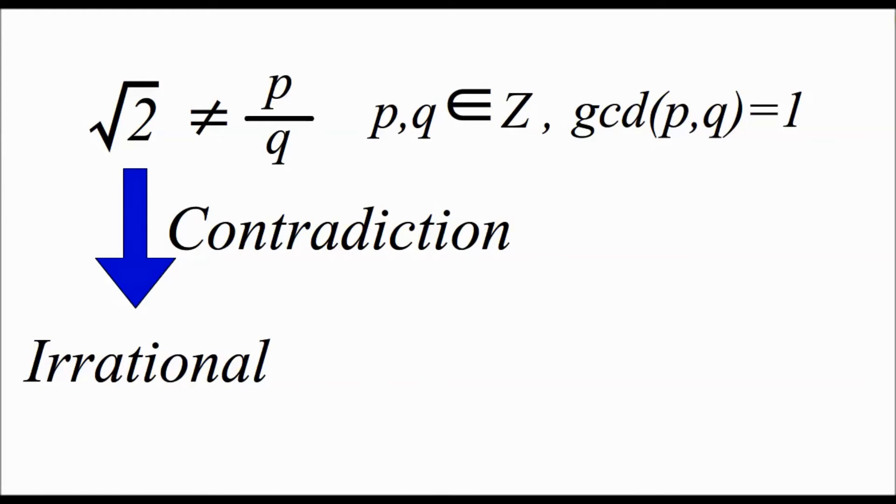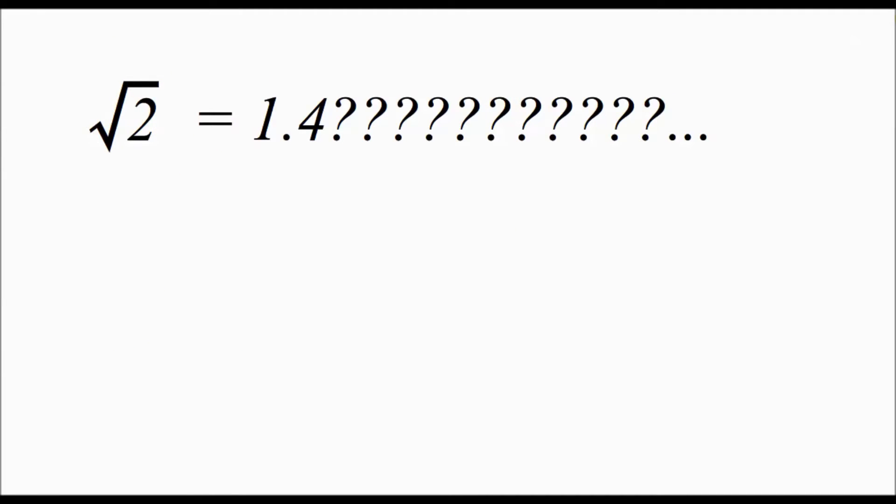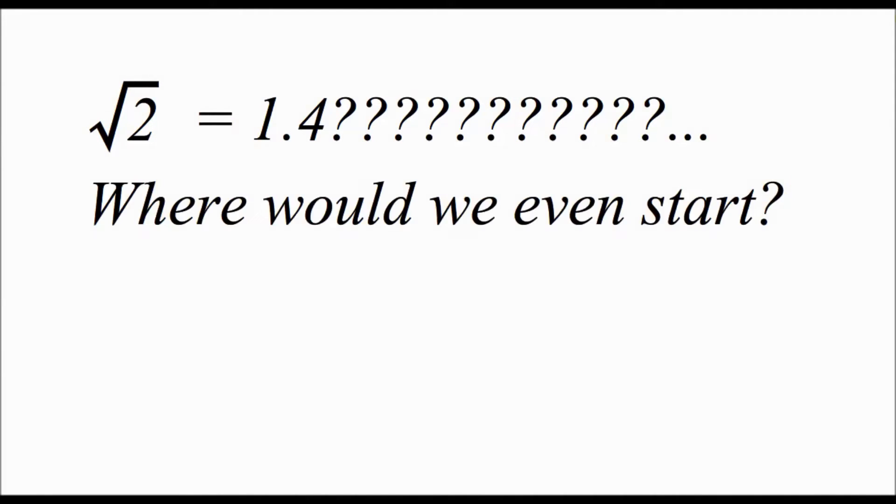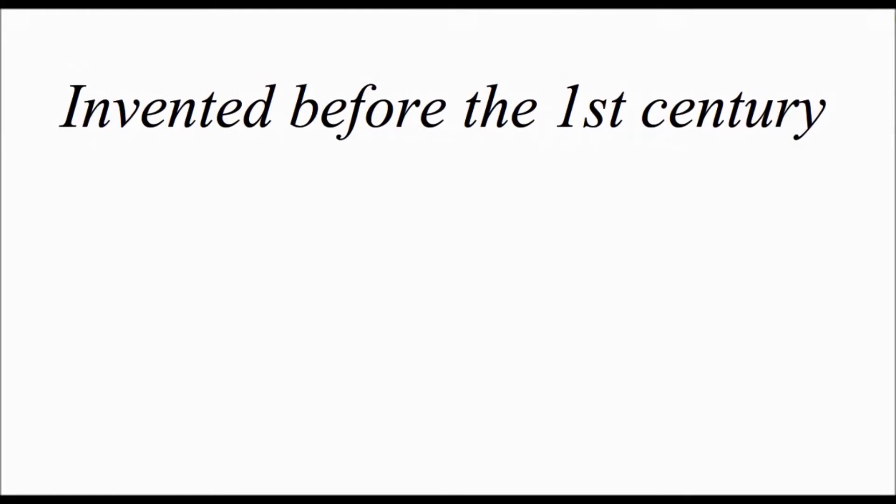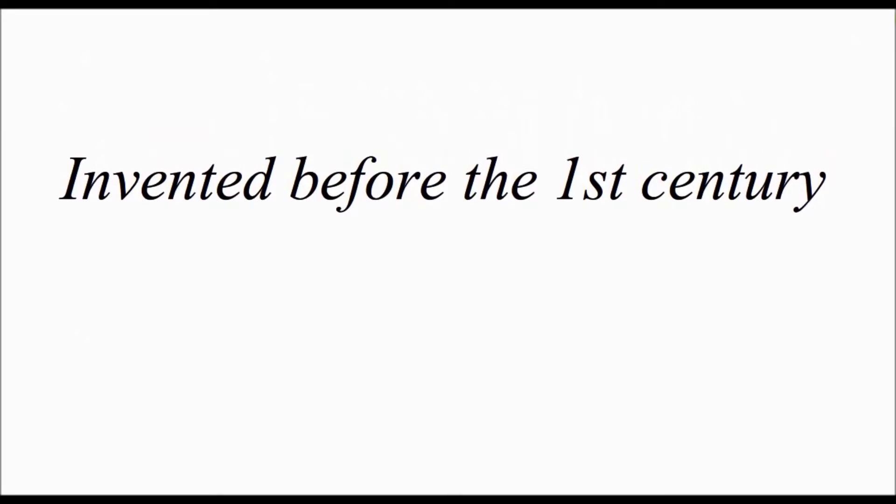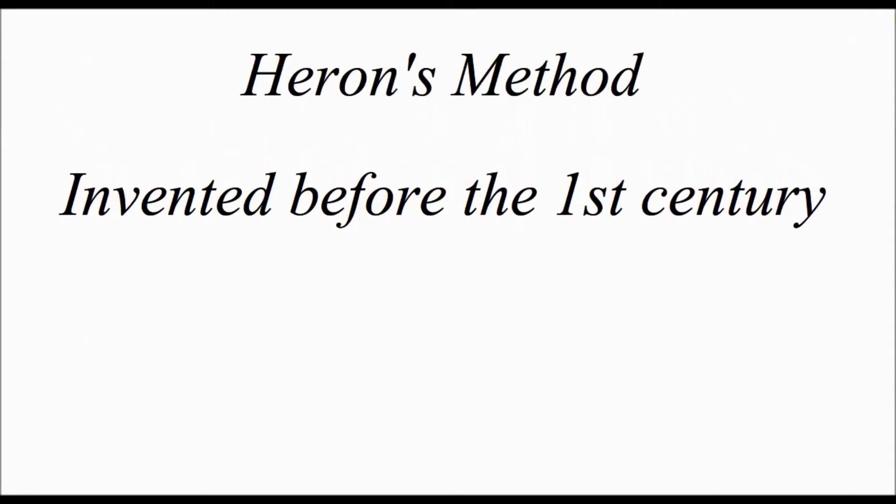However, here is the problem many people have wondered. How can we calculate the decimal value of square root of 2? Where would we even start, assuming we did not want to use trial and error? One way was invented before the first century. It's called Heron's method.